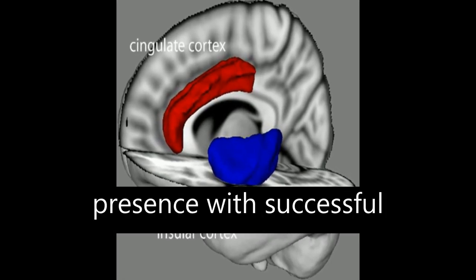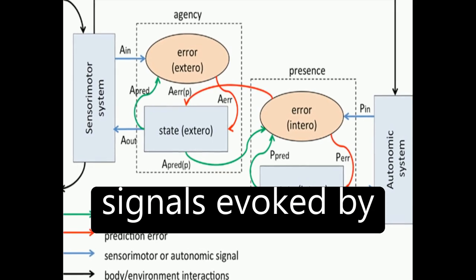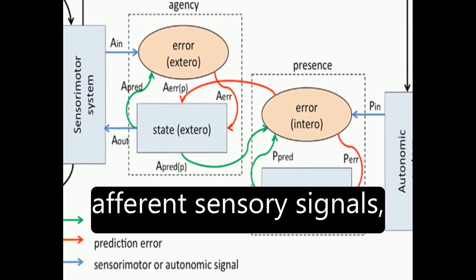The model associates presence with successful top-down predictions of informative interoceptive signals evoked by autonomic control signals and visceral responses to afferent sensory signals.